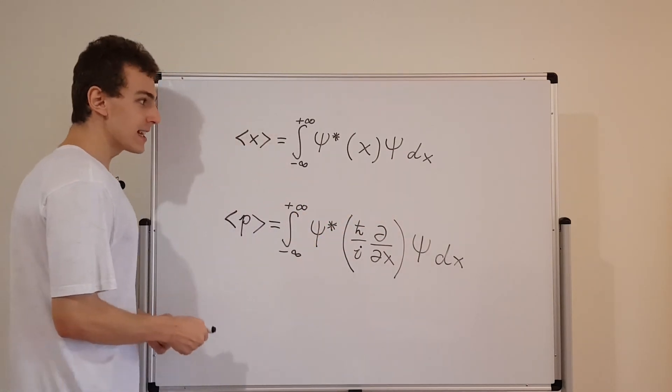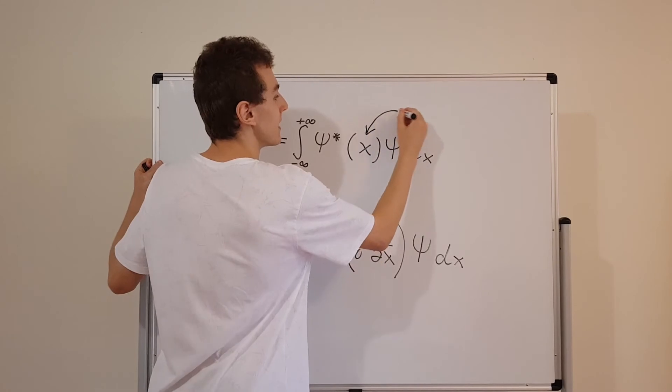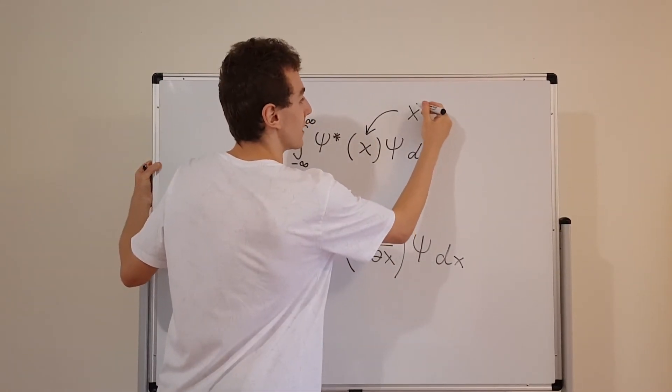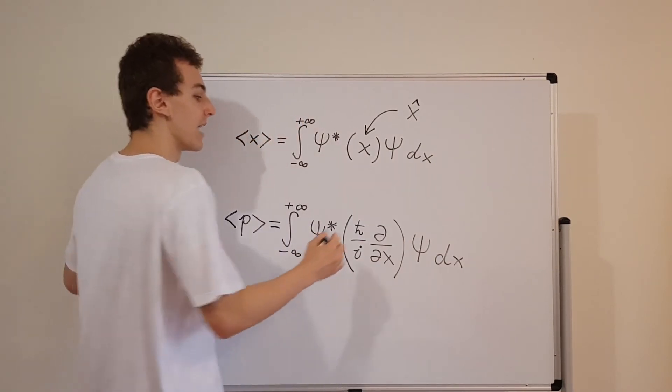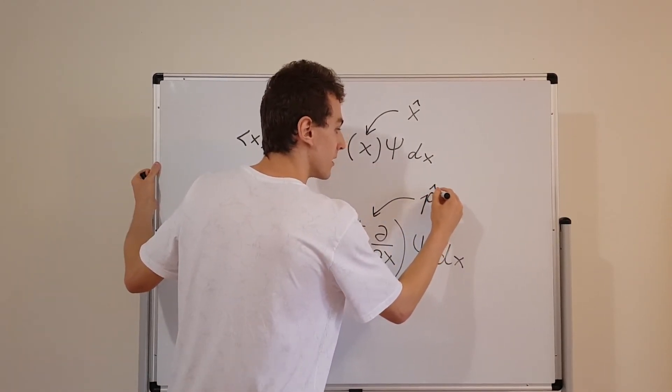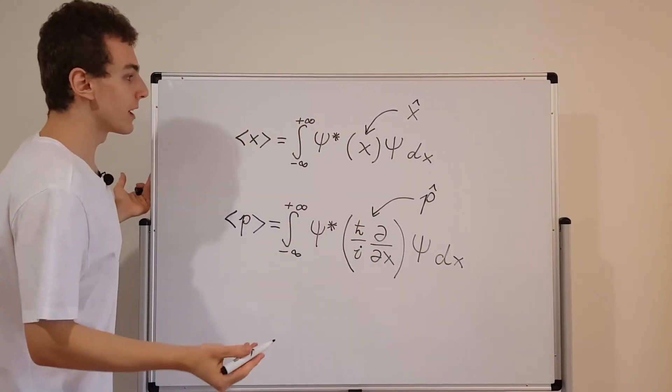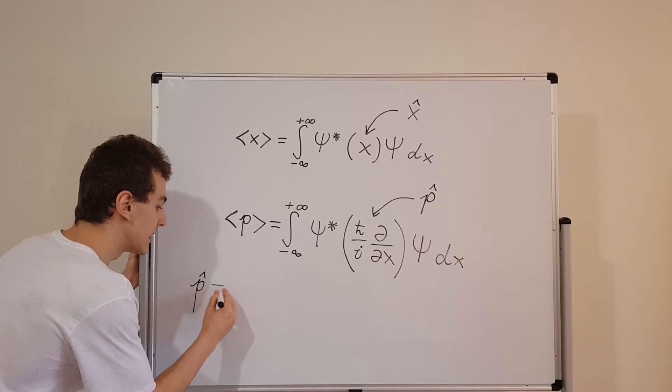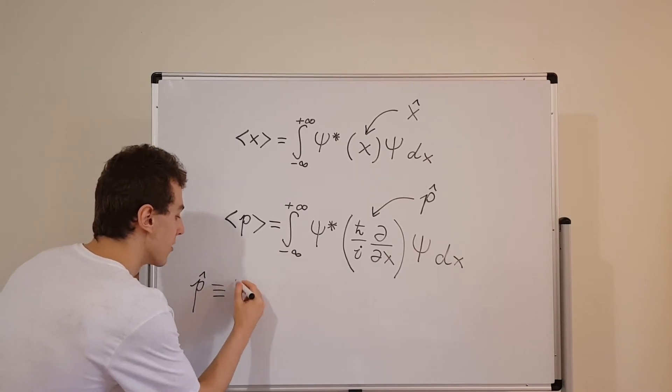So this thing in the middle over here, I'm going to call that the position operator. We'll put a little hat on it. So this is the position operator. And this thing over here, I'm going to call that the momentum operator. The momentum operator, in fact, I'll write it like this. The momentum operator is equivalent to this thing over here.